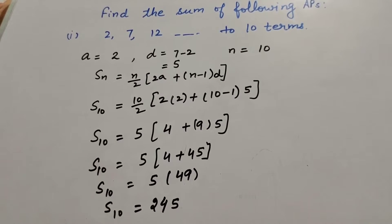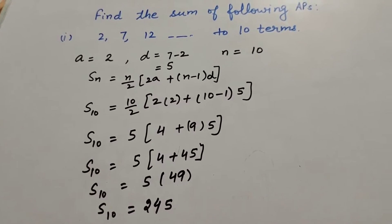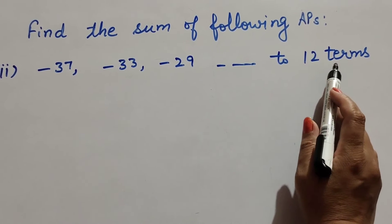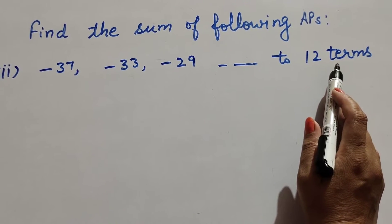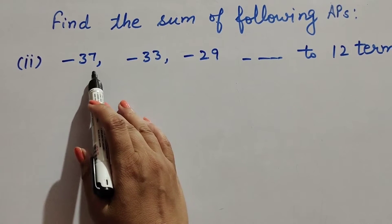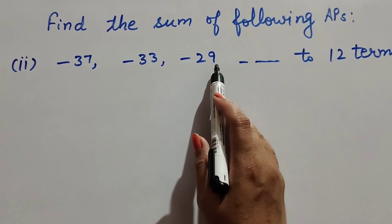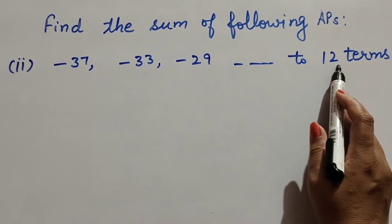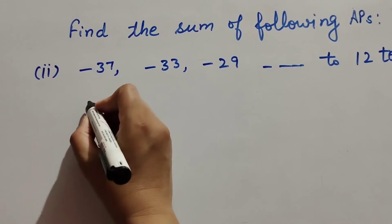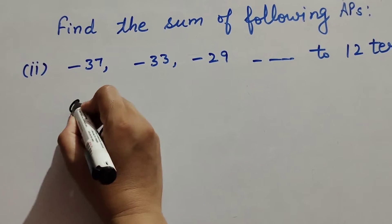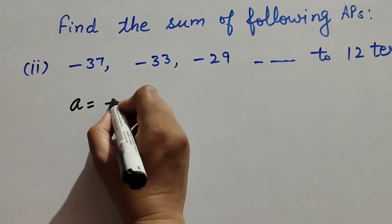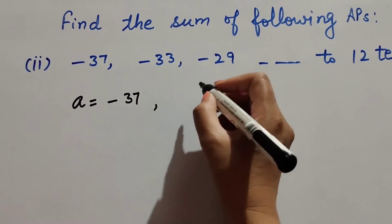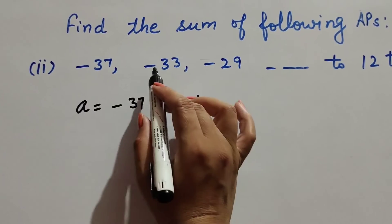Now we move to the second part. There is one AP series given and we find the sum of 12 terms. The given AP is −37, −33, −29, and so on up to 12 terms. The first term a is equal to −37.